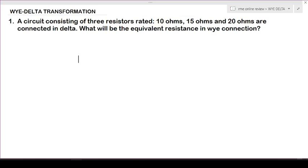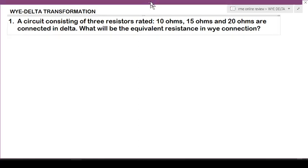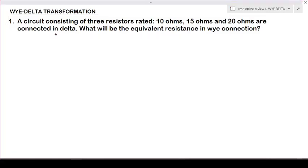We have three resistors of 10, 15, and 20 ohms which are connected in delta, and we are going to transform them into wye connection. Let's start with the equivalent circuit solution.